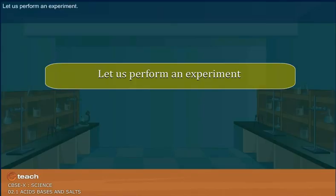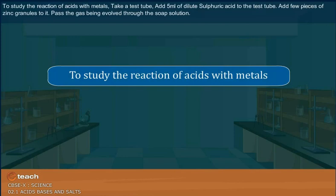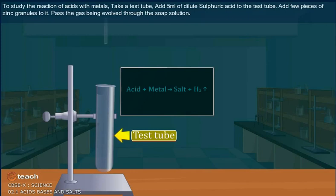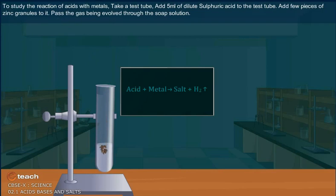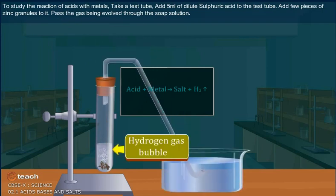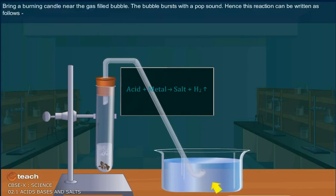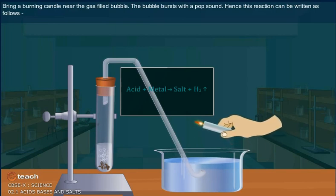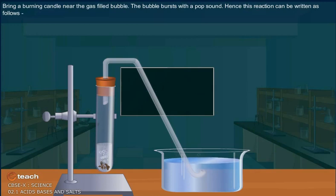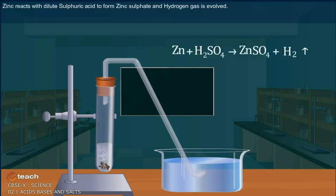Let us perform an experiment to study the reaction of acids with metals. Take a test tube, add 5 ml of dilute sulfuric acid, then add a few pieces of zinc granules. Pass the gas evolved through soap solution and take a burning candle near the gas-filled bubble — the bubble bursts with a pop sound. This reaction can be written as: zinc reacts with dilute sulfuric acid to form zinc sulfate, and hydrogen gas is evolved.